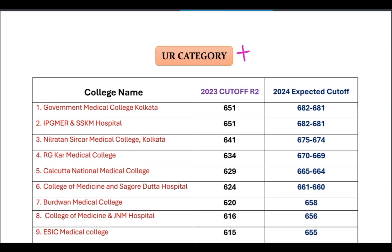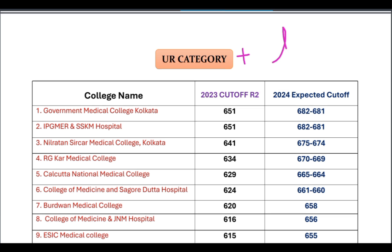I have tried my level best to understand what is going on in the future of CAT and ASPIRANTS — what would be the college-wise expected cut-off mark for other categories like SC, OBC, and EWS categories. But depending upon the data we have right now, it is impossible to calculate what would be the college-wise and category-wise expected cut-off mark for the other categories.